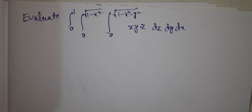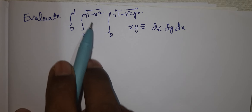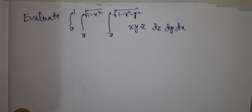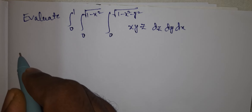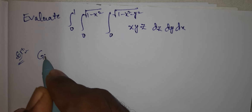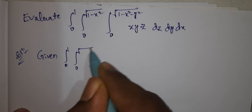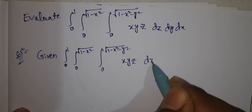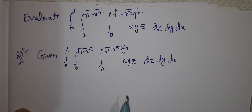Hi viewers, welcome to Rajesh Lekkalu. Today our topic is a triple integral problem. This is very important when you get the semester exam. Evaluate the integral from 0 to 1, 0 to √(1-x²), 0 to √(1-x²-y²) of xyz dz dy dx. We have three variables and three sets of limits.